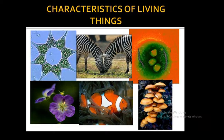One way of remembering this list of characteristics of living things is by using the mnemonic MRS GREN, where M represents movement, R represents respiration, S is for sensitivity, G for growth, R for reproduction, E for excretion, and N for nutrition.